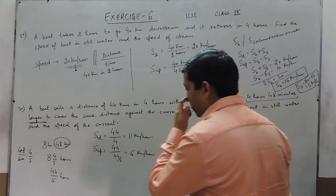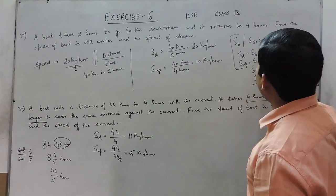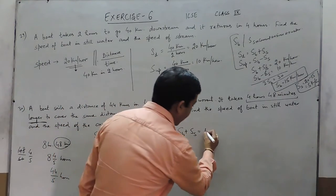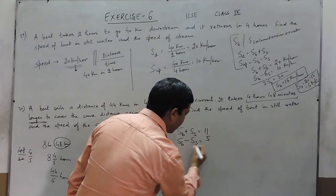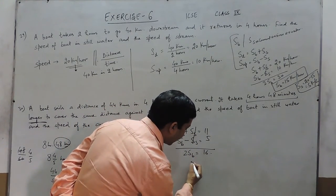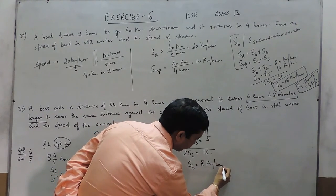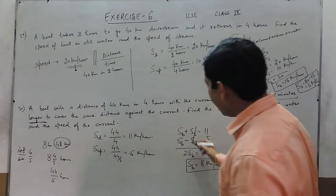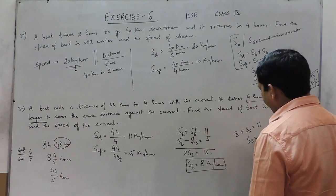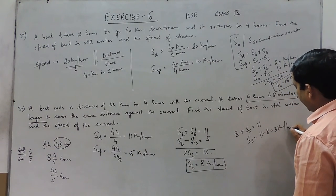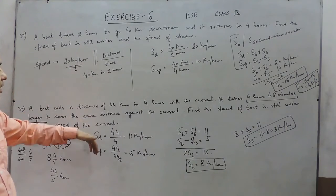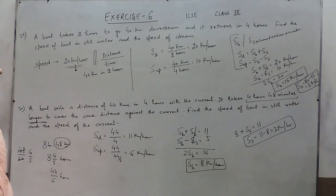Now that we have solved for speed downstream and speed upstream, we write: speed of boat plus speed of stream equals 11, and speed of boat minus speed of stream equals 5. Adding these two equations, the stream speed terms cancel out, giving twice the speed of boat equals 16, so speed of boat comes out to be 8 km per hour. Putting this into the first equation: 8 plus speed of current equals 11, so the speed of stream becomes 11 minus 8, which is 3 km per hour.